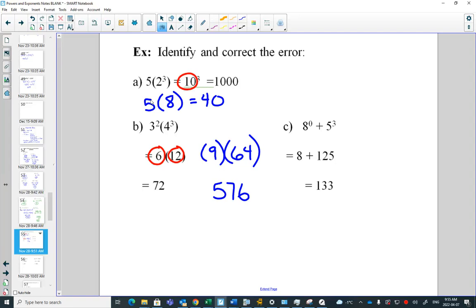Any mistakes in C or C good? Eight to the zero, it's not eight times zero, because that would be different too. So this is our mistake. It should be one plus 125, 126.